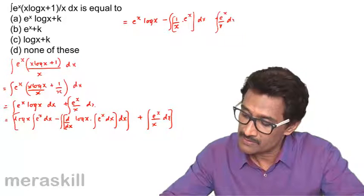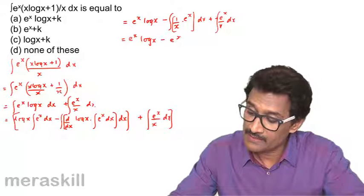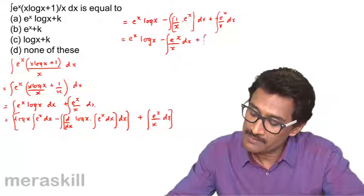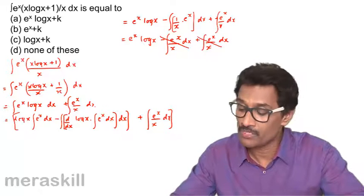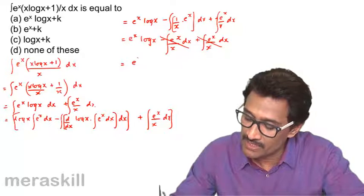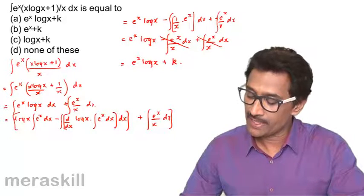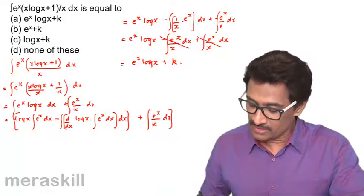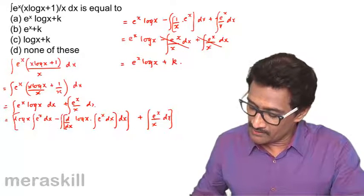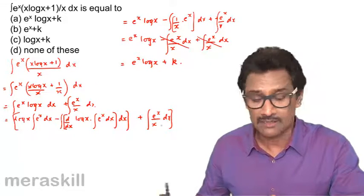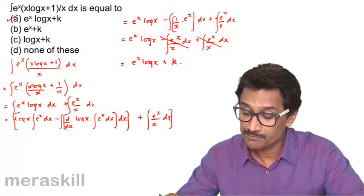Adding the remaining ∫e^x/x dx term, the two ∫e^x/x dx terms cancel each other out. So the final answer is simply e^x·log x + k, which is option A.